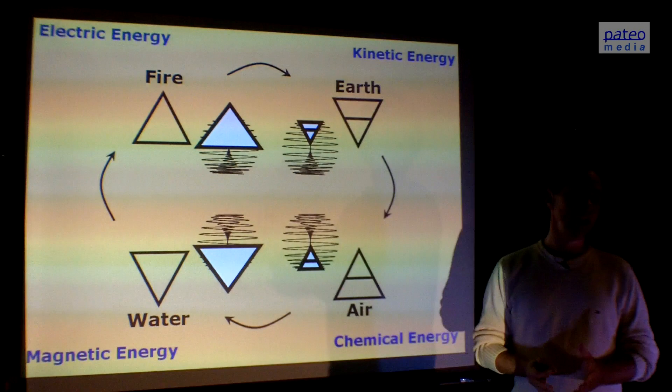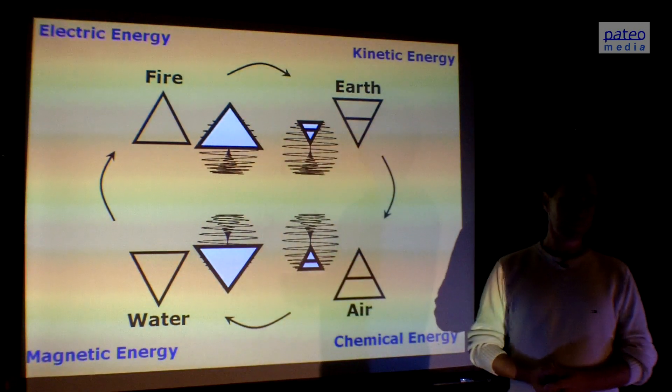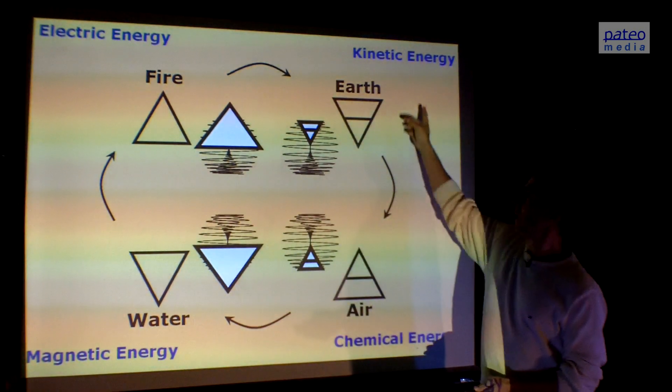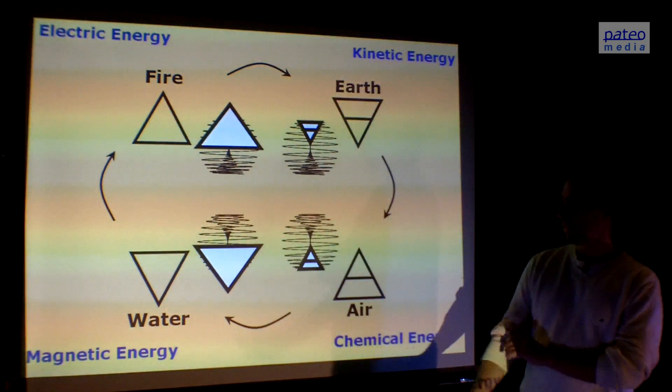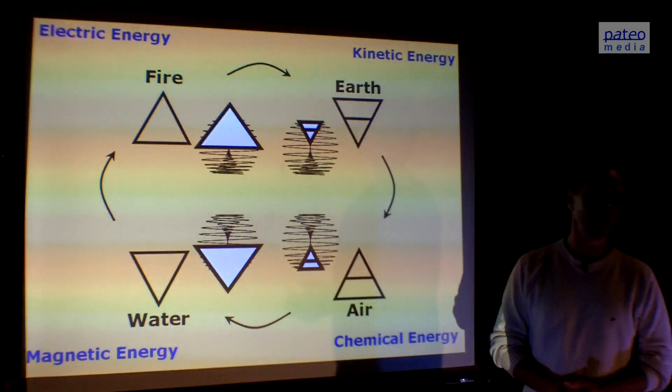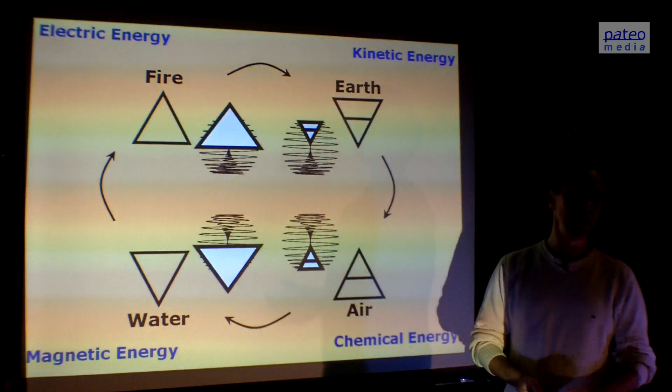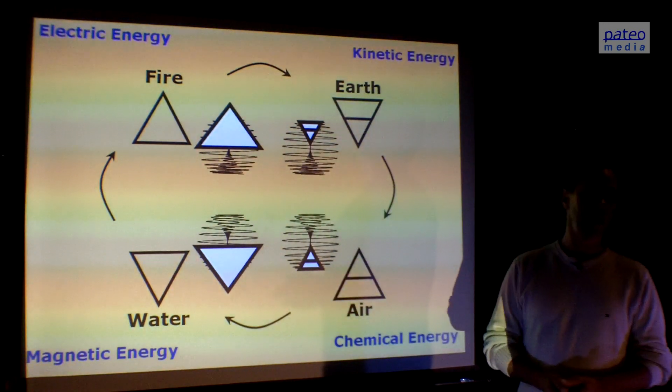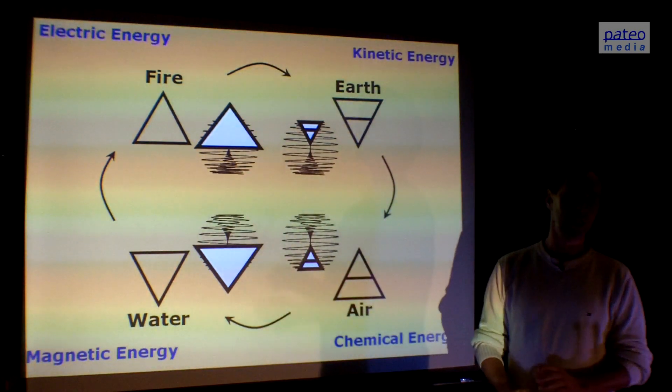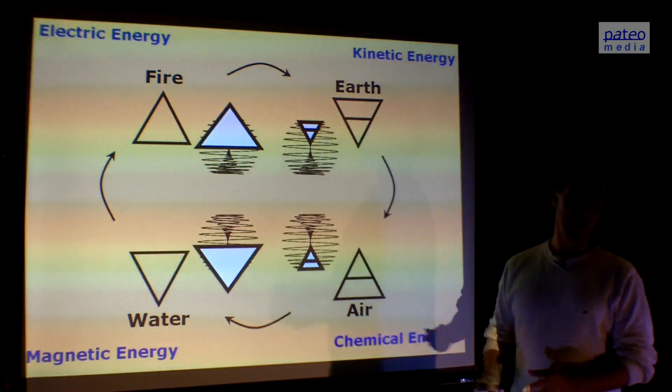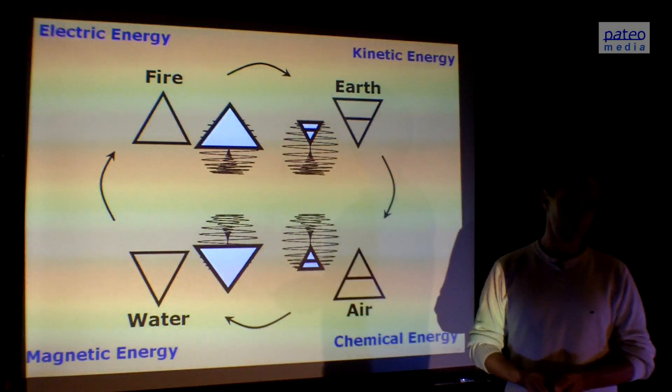There are also four types of energy. In fact, they are shadows of energy. Kinetic energy is related to earth. Chemical energy is related to air. Magnetic energy is related to water, as the work of Emoto clearly shows. And electric energy is related to fire. So again, we see that the four types of energy are related to shadows they bring on the wall.